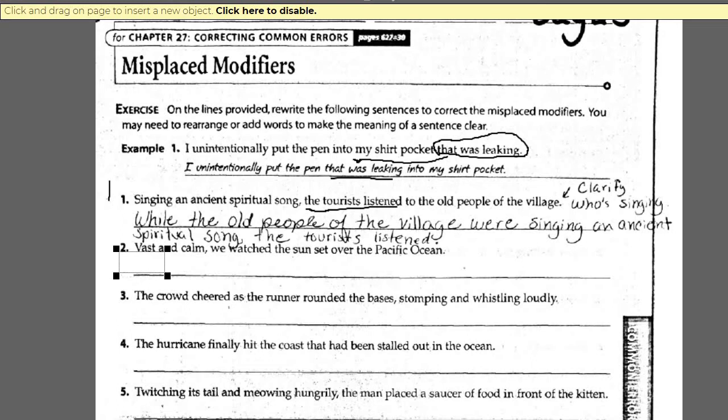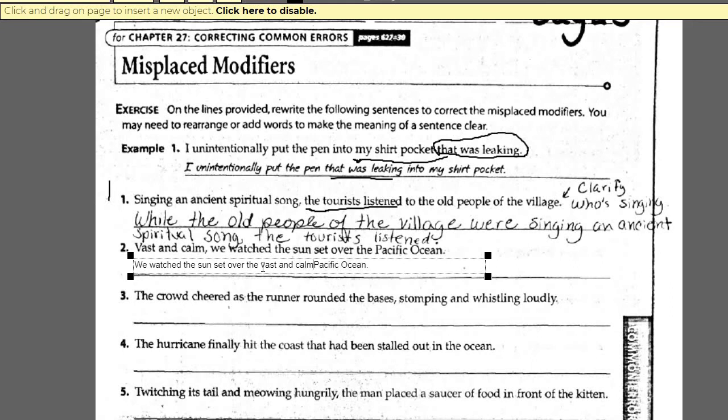PDF Escape will allow me to type this in. I'll change it to: 'We watch the sunset over the Pacific Ocean.' We want to describe it more specifically, and now we move the modifier 'vast and calm' — instead of at the beginning, it comes right next to the thing that we are describing.